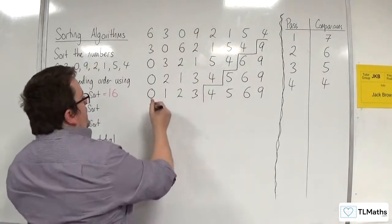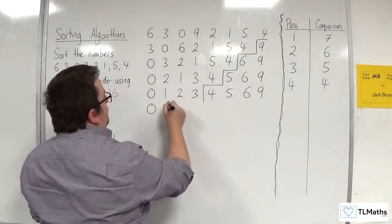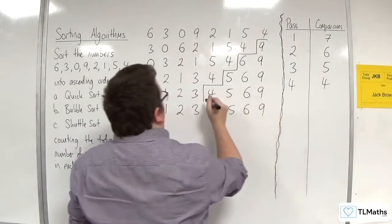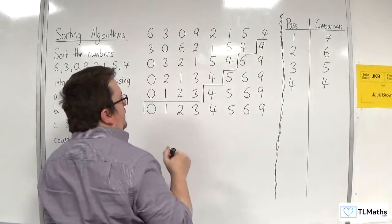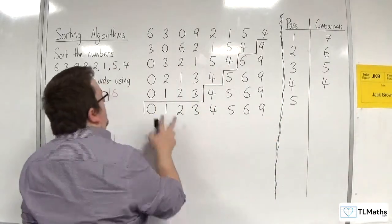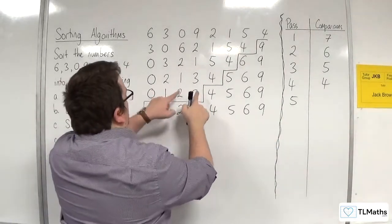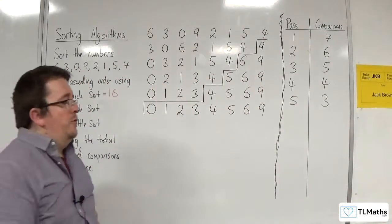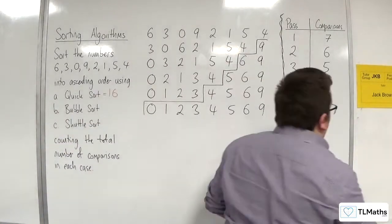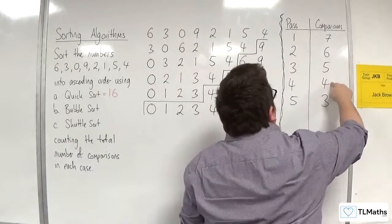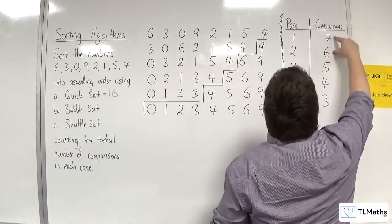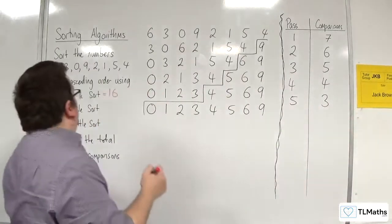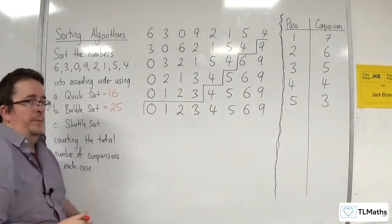Then 0 and 1 are compared, then 1 and 2, then 2 and 3 — no swaps that time, so we're done. In the fifth pass, we made 3 comparisons. So the total number of comparisons is 7 plus 6 plus 5 plus 4 plus 3, which equals 25 comparisons for the bubble sort. So currently the quicksort is winning — as the name would suggest.